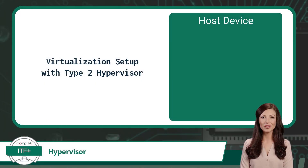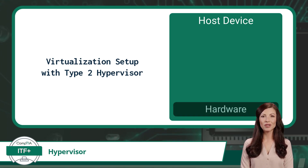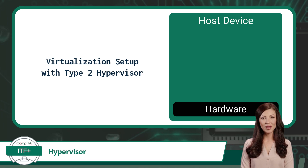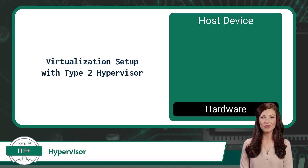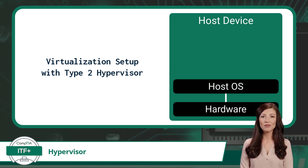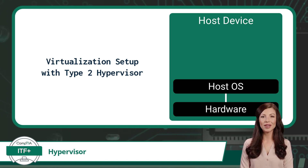Now for our next virtualization setup. Again, I will start with the computing device, or host device, represented by the same empty green box. This computing device will still have hardware, including items like the CPU, RAM, and storage drives, and we will still refer to it as the host device. Here is where we differ from the first setup: instead of installing a type 1 hypervisor, or bare metal hypervisor, as the host device's OS, we will install an OS like Linux, Windows, or Mac OS.